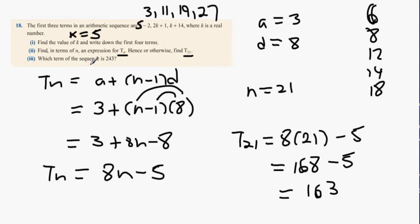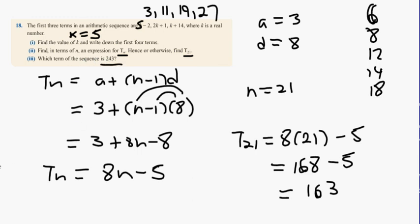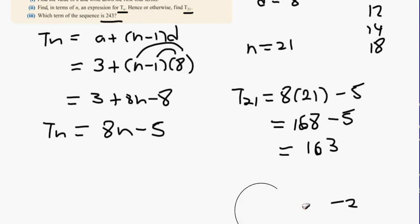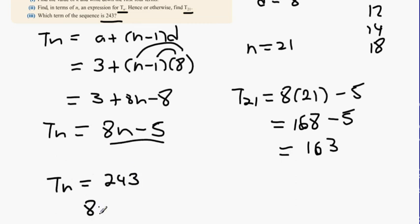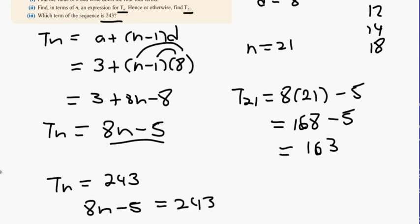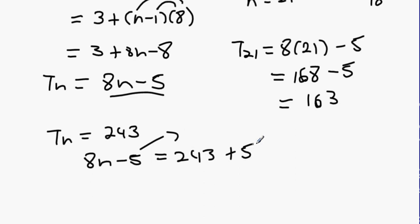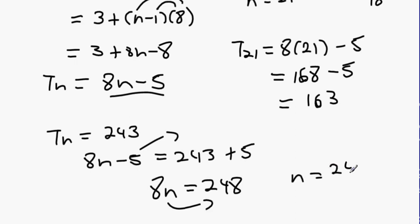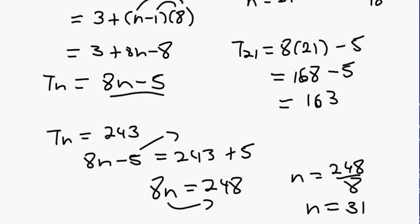Which term in the sequence equals 243? Set Tn equal to 243: 8n minus 5 equals 243. Bring the 5 over: 8n equals 248. Dividing by 8 gives n equals 31. So 243 is the 31st term of the sequence.